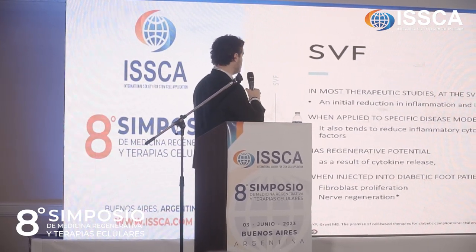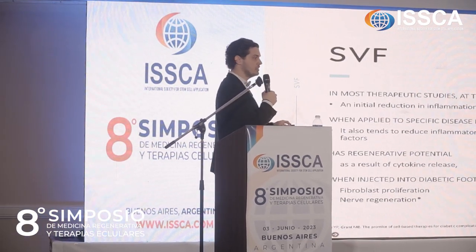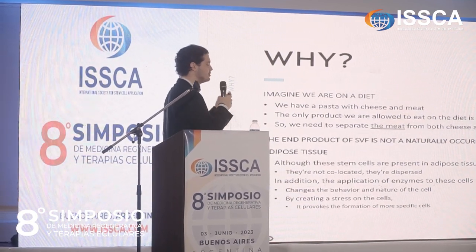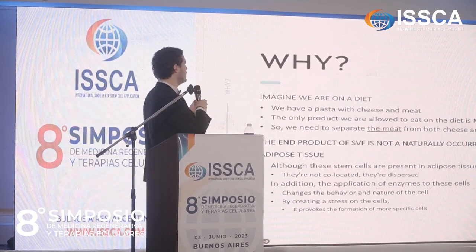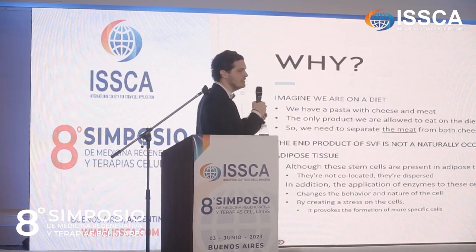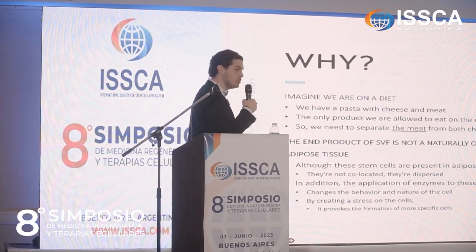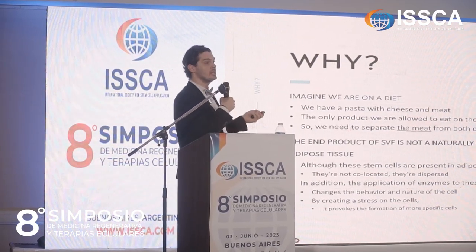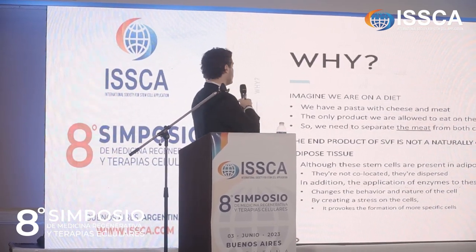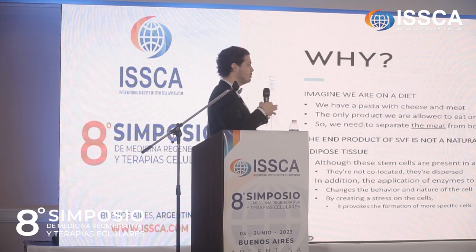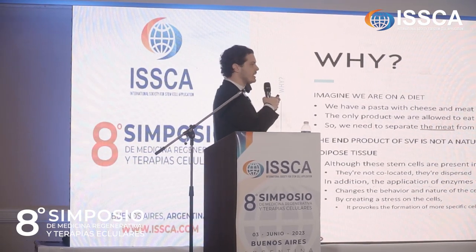When we inject SVF into diabetic foot patients, we see nerve regeneration and fibroblast proliferation. Why do we bother to create SVF rather than just giving the whole adipose tissue to the patient? Think of it like a diet — if you're eating pasta with cheese and meat but only the meat is allowed, you need to separate it. The SVF is not the naturally occurring substance in fat tissue. Although stem cells are present in adipose tissue, they are dispersed and not co-located, so we create the SVF using enzyme treatment.